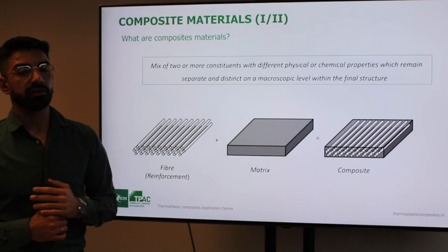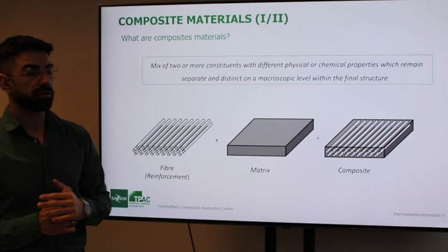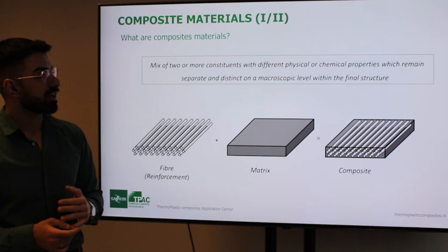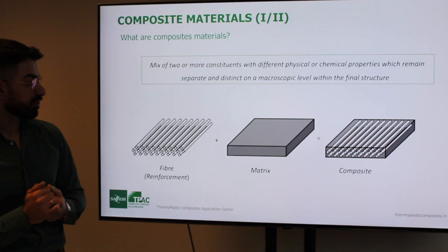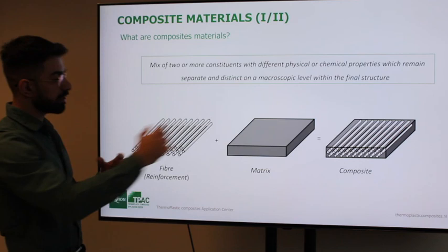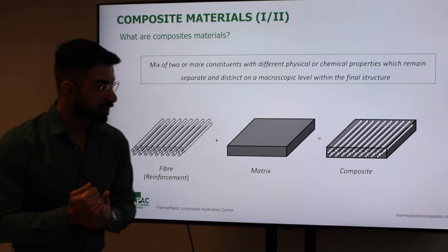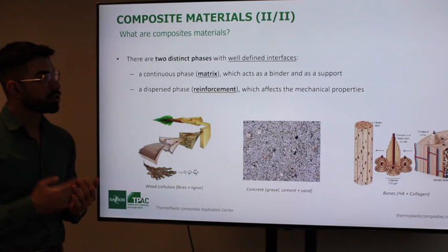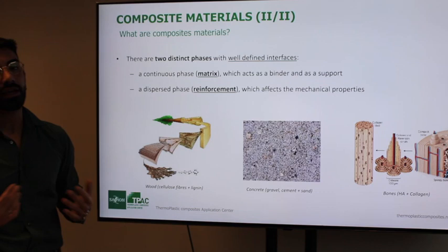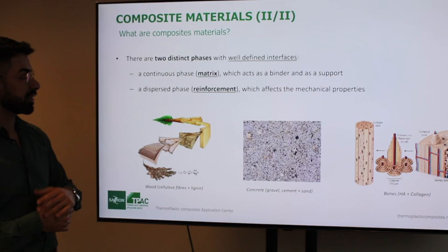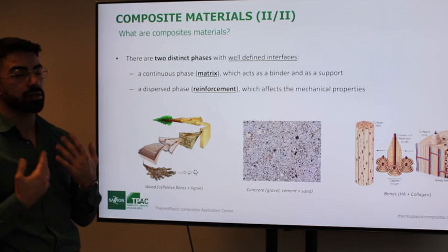Moving to composites — the main topic of our lecture. A composite material is a mix of two or more constituents with different physical, chemical, or mechanical properties, which remain separate and distinct at the macroscopic level within the final structure. There are two distinct phases with well-defined interfaces: a continuous phase, which is the matrix — acting as a binder and support — and a dispersed phase, the reinforcement, which gives strength and stiffness to the final material.